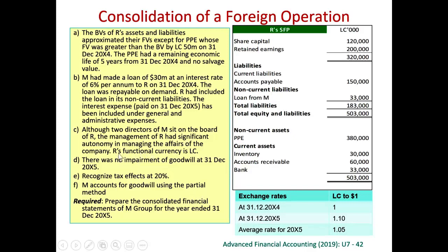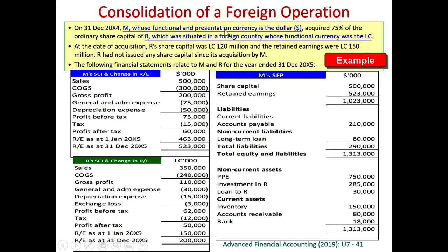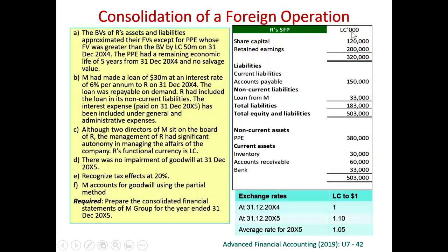The question says that this foreign subsidiary's functional currency is LC. They have prepared the financial statements in LC, but we want to consolidate in dollar because the parent's presentation currency is dollar. Any translation from LC to dollar is a translation from the functional currency to the presentation currency. Therefore, for this example, the closing rate method applies.